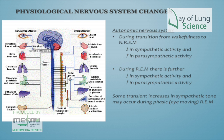The autonomic nervous system is affected during sleep. During wakefulness and non-REM sleep, sympathetic activity decreases and parasympathetic activity increases. During REM, sympathetic activity also decreases and parasympathetic activity increases. Your central nervous system is therefore controlled and regulated during sleep as well.